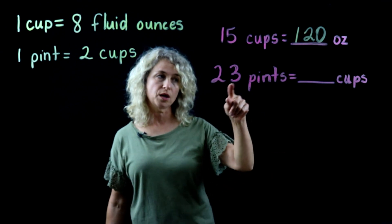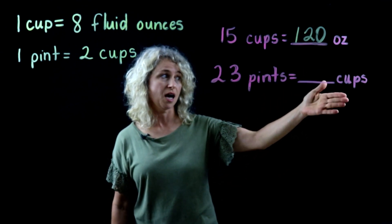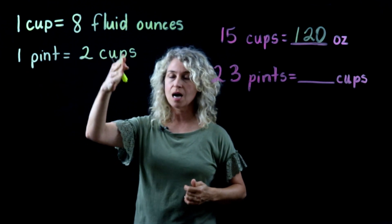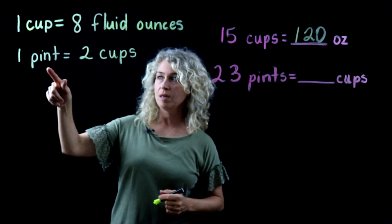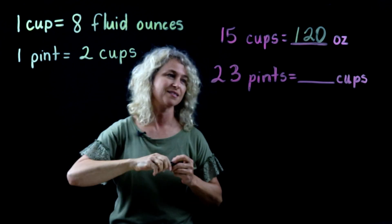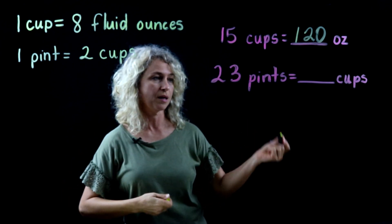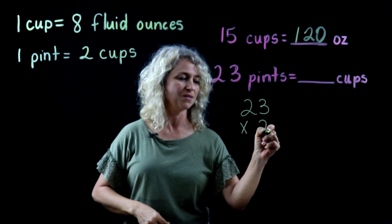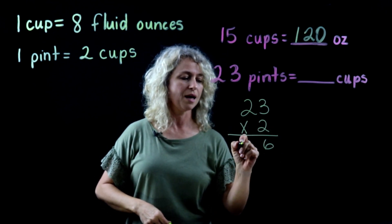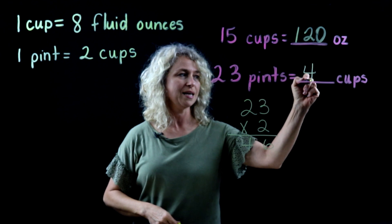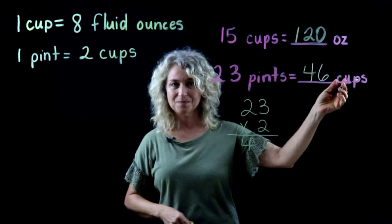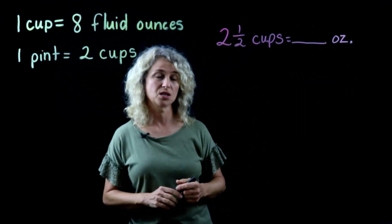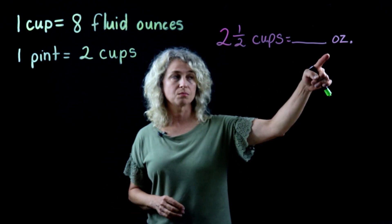On this next example: 23 pints equals how many cups? Look at your chart — pints to cups. We know that in one pint there are two cups. So we multiply 23 times 2 and get 46 cups.